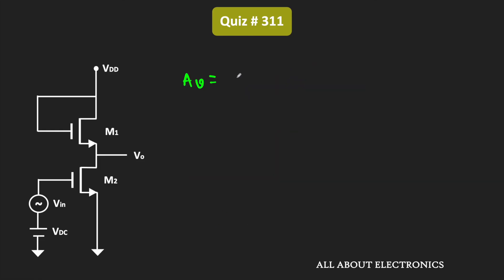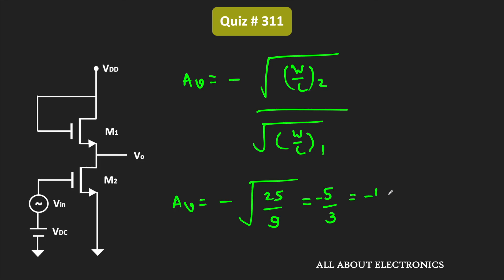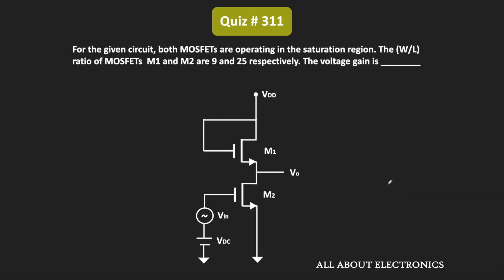Taking the ratio of Gm2 and Gm1, the voltage gain can be given as minus the square root of (W/L)₂ divided by (W/L)₁. In the question, the W by L ratio of the second transistor is 25 and for the first transistor it is 9. Therefore, the voltage gain equals minus the square root of 25 divided by 9, which is minus 5 by 3, or equivalently minus 1.667. This is the voltage gain of this amplifier circuit.